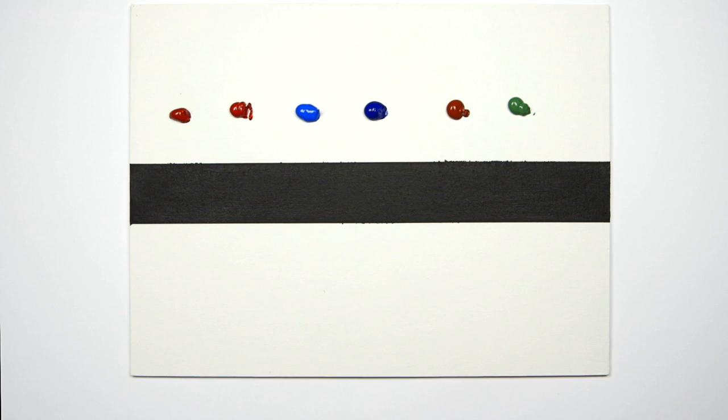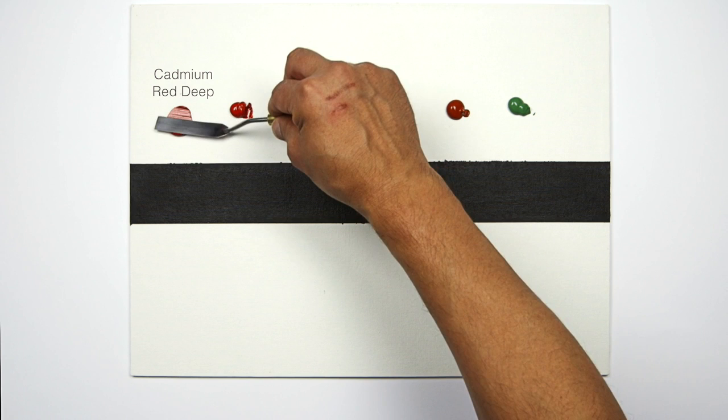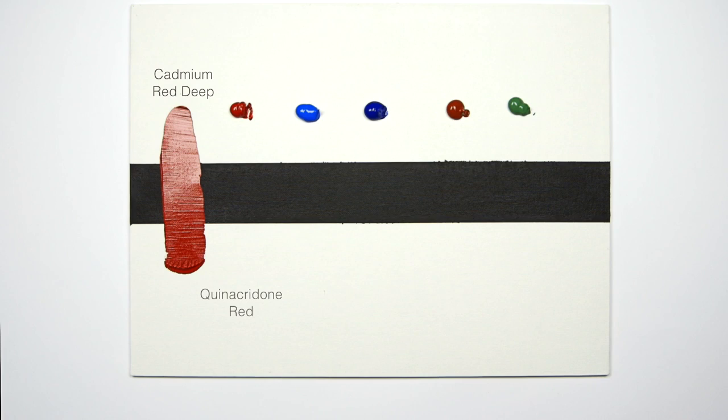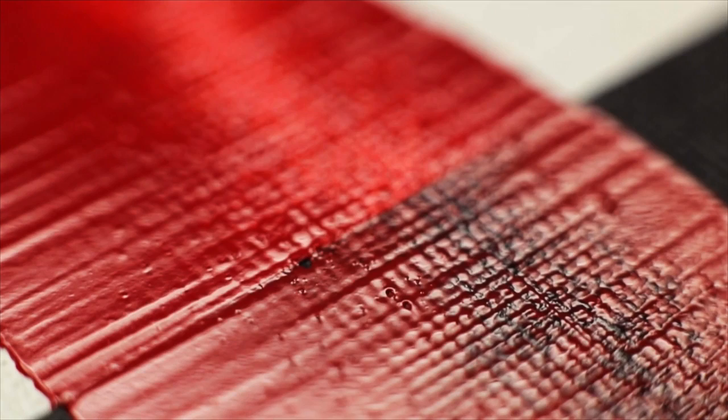I'm going to demonstrate this by first of all showing two different reds. Cadmium Red Deep is very opaque and because of that it obliterates the black line underneath, whilst Quinacridone Red is a transparent color and it allows the black line to show through.